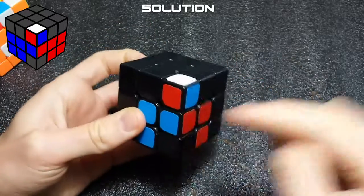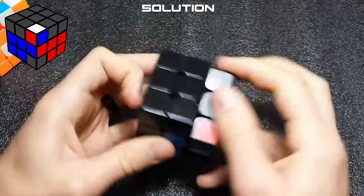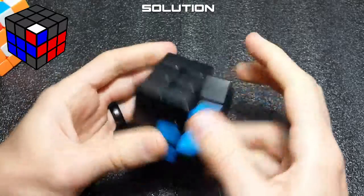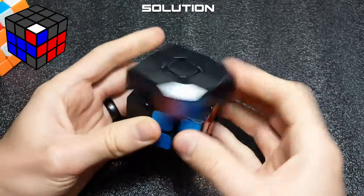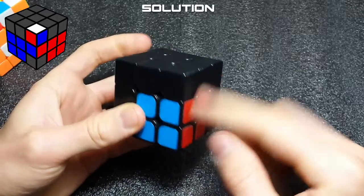Three of these in either direction will generate this case. So three sexy moves creates this case, or three anti-sexy moves will solve this case.